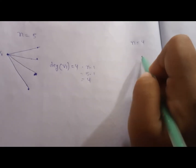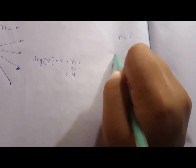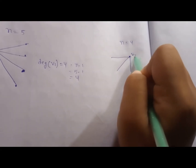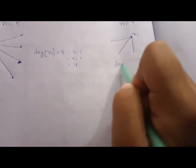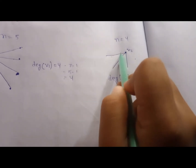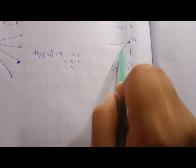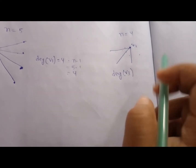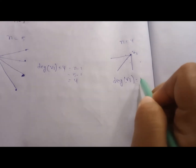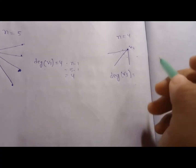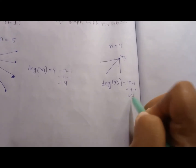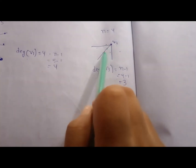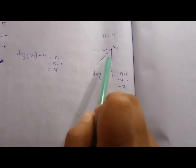Now take another example where the number of vertices is equal to four. Let's say vertex v3 is connected with the other three vertices, so degree of v3 equals three. The maximum degree in a simple graph is n minus one; here n equals four, so n minus one equals three. So v3 is connected with three other vertices, which is the maximum. Now we will do the theoretical proof.